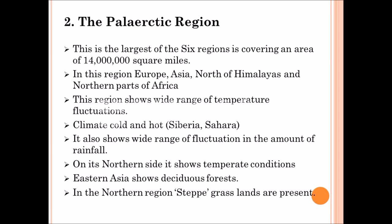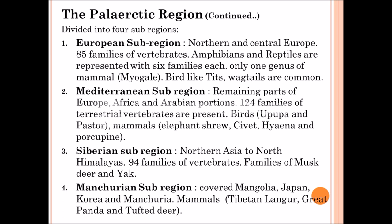Due to the high level of temperature fluctuation in this region, we can see temperate areas in the northern side and deciduous forests in Eastern Asia. The Palearctic region is divided into four sub-regions: European sub-region, Mediterranean sub-region, Siberian sub-region, and Manchurian sub-region.